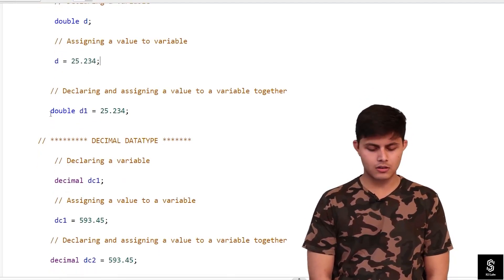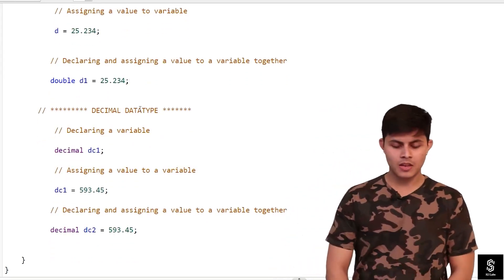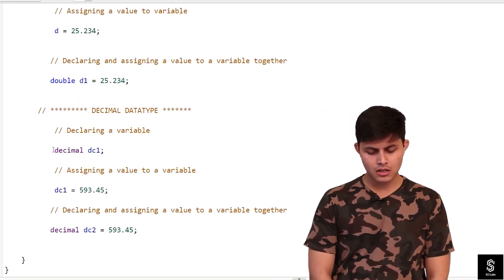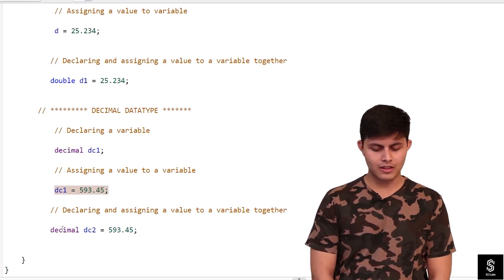If you want to do it both in one line, then this is how we can do it. Then comes decimal data type. Decimal data type also works similarly: decimal dc1, dc1 equals 593.45, and then this.